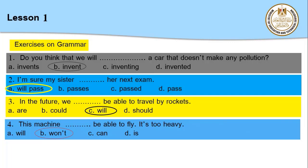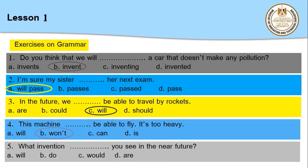Number four: this machine [blank] be able to fly — will, won't, can, is? It says 'it's too heavy,' which implies it cannot fly, so we need the negative: 'this machine won't be able to fly — it's too heavy.' Number five: what invention [blank] you see in the near future — will, do, would, are? 'Near future' is a time signal, so we use 'will': 'what invention will you see in the near future?'